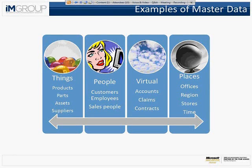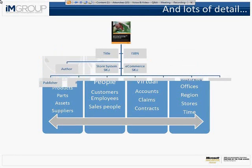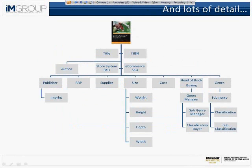Not all examples of Master Data are things that you can see and feel. Sometimes you've got account hierarchies — that would be a good example of Master Data — claims, contracts. Very common ones would be an organizational structural hierarchy, so you'd have offices that are within regions, within a larger part of that organizational hierarchy. Once we consider one particular example, here we've got a book, which although may be Master Data in itself, has lots of properties and details, and in order to manage it properly you need to be consistent with all those details.